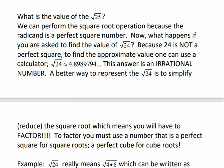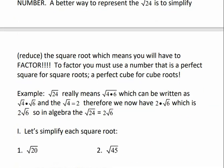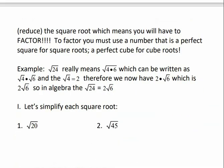A better way to represent the square root of 24 is to simplify the square root, which means that we have to factor. To factor, you have to use a number that's a perfect square for square roots and a perfect cube for cube roots. We would find the biggest perfect square that divides into 24, and that would be 4. 4 times 6 is 24, and since 4 is a perfect square, we can take the square root of that, which is 2. So it gets to come out of the radical. But since 6 is not a perfect square and it doesn't have any perfect square factors, it has to stay under the radical. So 2√6 would be our simplified radical.